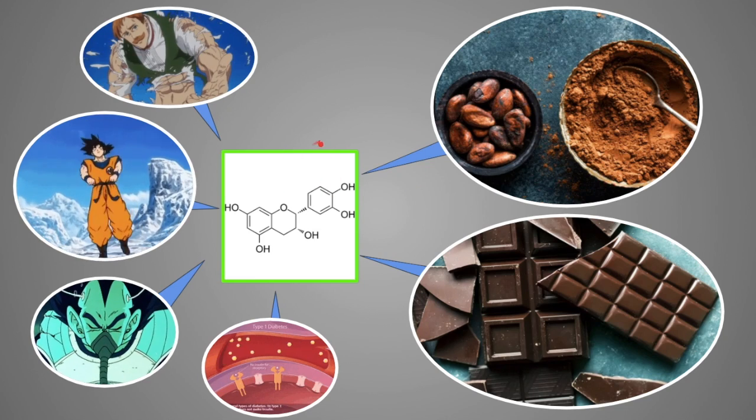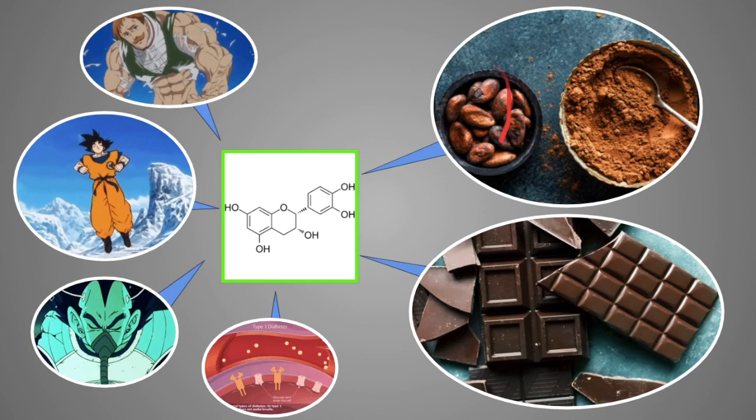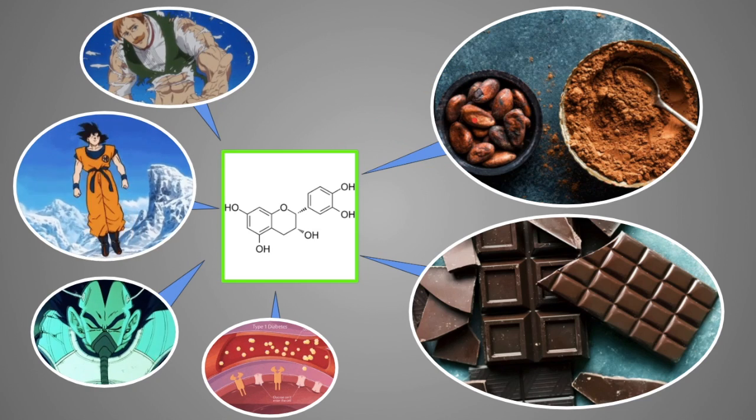In fact, it has the highest epicatechin content out of all the plants out there. Remember, guys, this is a flavonoid, so it's found in many plants. But once again, cocoa powder has the highest amount by far.